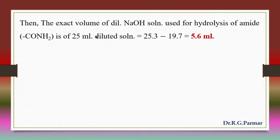So the exact volume of NaOH used in the hydrolysis of amide is 25.3 − 19.7 = 5.6 ml. That is, 5.6 ml of NaOH was used in the hydrolysis of amide.